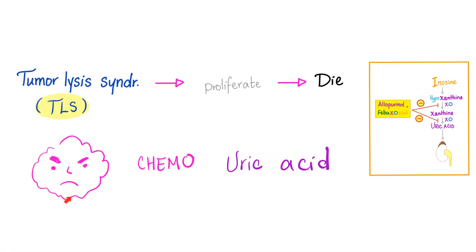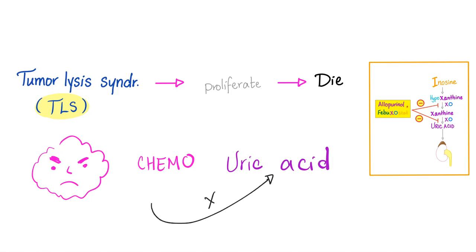How about tumor lysis syndrome? You have a tumor and your doctor is giving you chemotherapy — rapid proliferation followed by rapid destruction of the tumor. Tumors have cells, cells have nuclei, nuclei have DNA, DNA has purines, and purine degradation will yield uric acid. How? Xanthine oxidase. If we can inhibit it using allopurinol, we prevent the formation of uric acid.